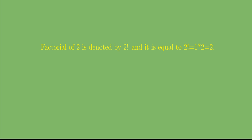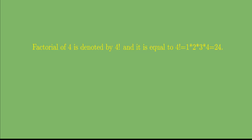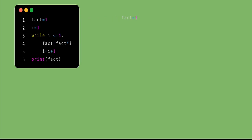The factorial of 1 is denoted by 1! and its value is 1. Factorial of 2 is denoted by 2! and equals 1×2 = 2. Factorial of 3 is 1×2×3 = 6, and factorial of 4 is 1×2×3×4 = 24. In this program I will calculate factorial of 4, which equals 24.